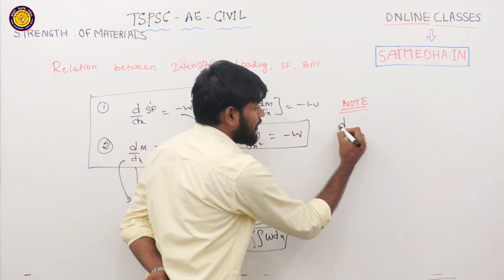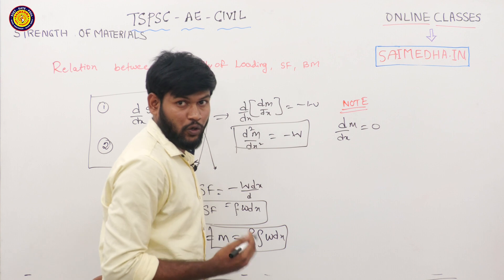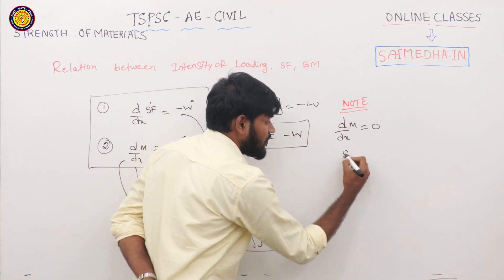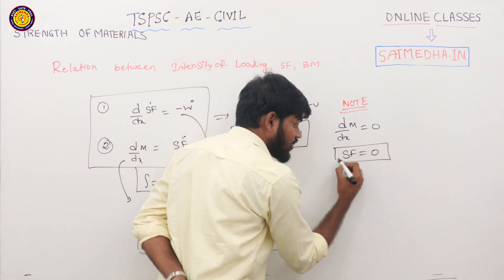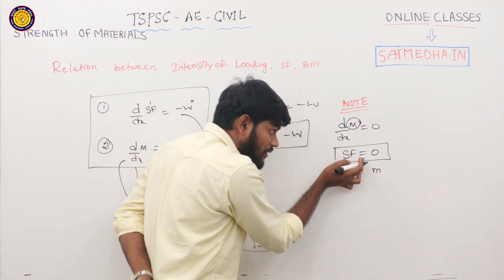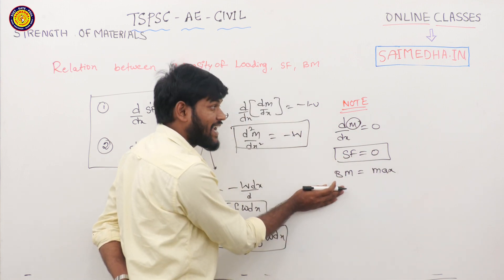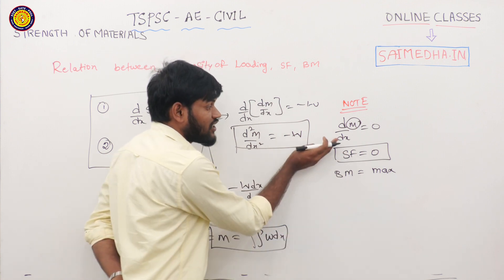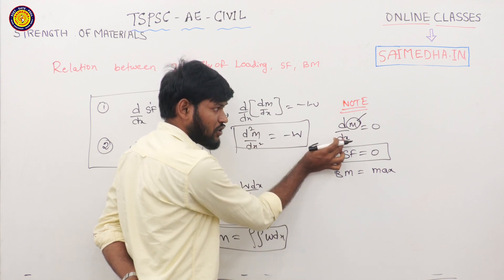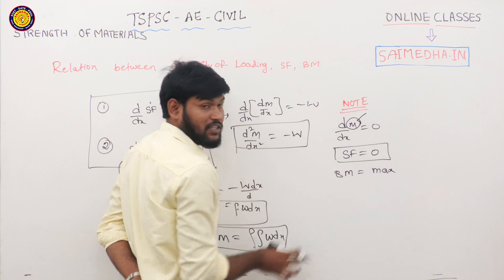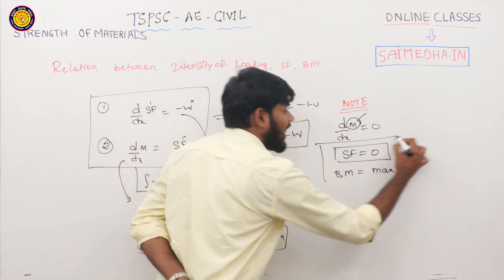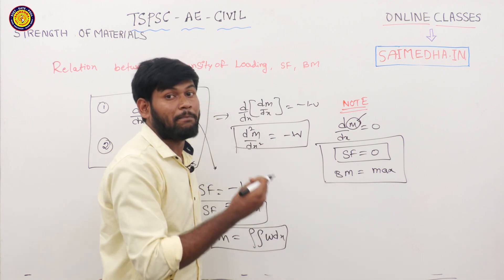Very important note: where dM/dx equals 0, that means the rate of change of bending moment is zero, which means shear force is zero. Where shear force is zero, the bending moment is maximum. So at the point where shear force equals zero, the bending moment is at its maximum value.